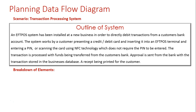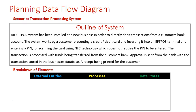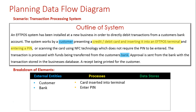We're going to break down the elements: external entities, processes, and data stores. For external entities, we can identify there is a customer and there is the bank — two main external entities in this scenario. For processes, firstly the customer presents their credit or debit card into the terminal. They then have to enter a PIN, or they may choose to use the NFC option if their card allows — remembering that NFC does not require a PIN to be entered.